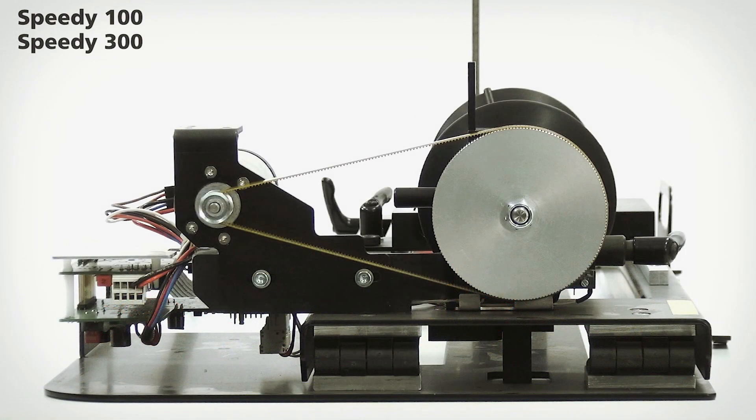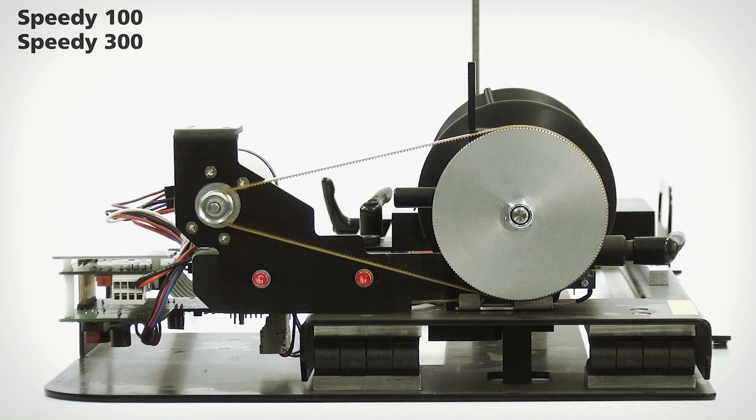First, we'll need to loosen the belt tension. On the Speedy 100 and 300, we'll need to loosen these two screws.